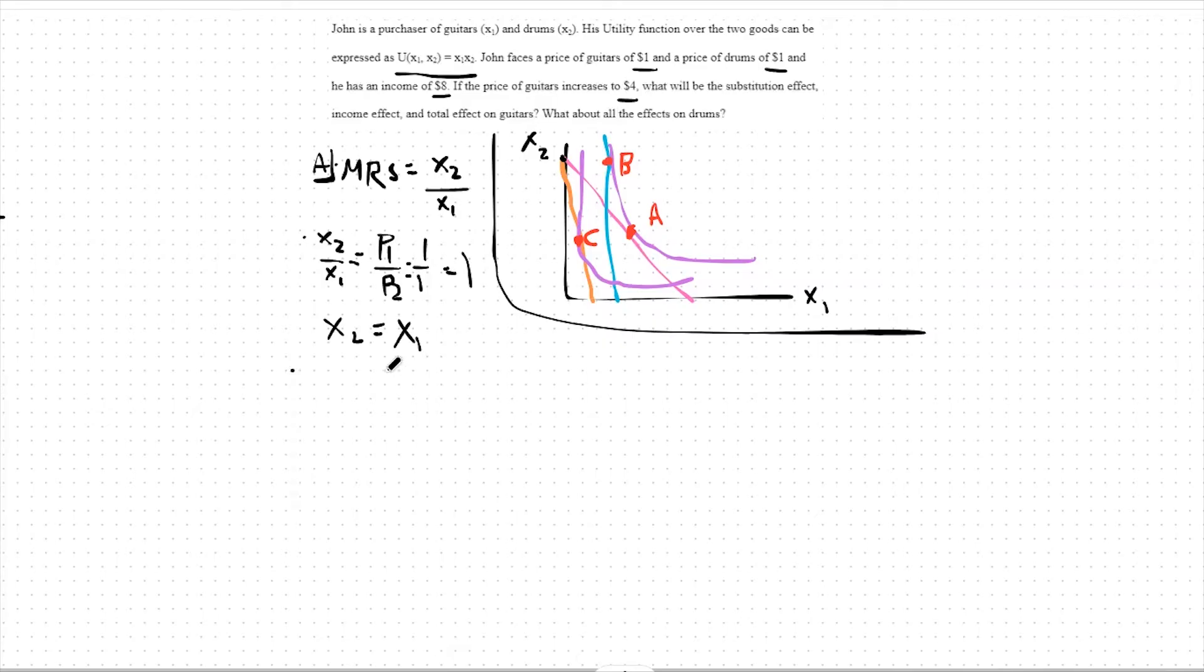With that identity in mind, we can go to our budget constraint. Our budget constraint will be the price of good one times the quantity of good one plus the price of good two times the quantity of good two, which will then be subject to our income of $8. Seeing as good one equals good two, we can plug in X1 into this X2 of this budget constraint. This means X1 plus X1 equals 8. So, 2X1 equals 8 or X1 equals 4. And if X1 equals 4, X2 also equals 4. Thus, optimally, for point A, we should see X1 equaling 4 and X2 equaling 4.